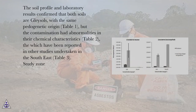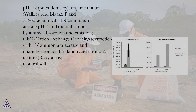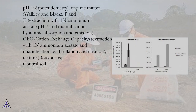Study Zone: Chemical properties and concentration of TPH in the soils studied. pH 1 to 2, Potentiometry; Organic Matter, Walkley and Black; P and K, Extraction with 1N Ammonium Acetate pH 7 and Quantification by Atomic Absorption and Emission; Cation Exchange Capacity, Extraction with 1N Ammonium Acetate and Quantification by Distillation and Titration; Texture, Bouyoucos.